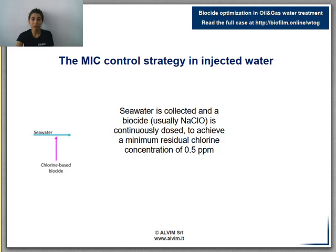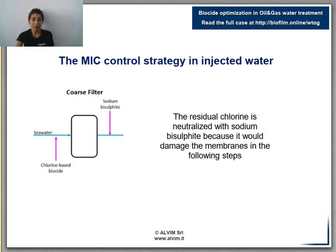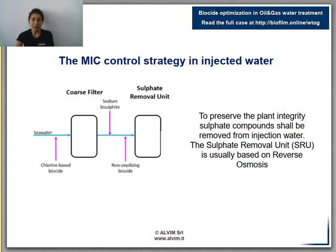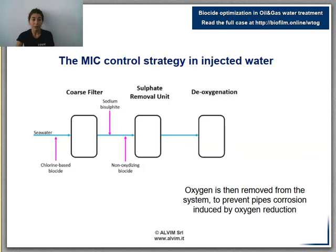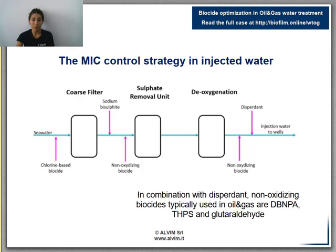First, seawater is collected and biocide is continuously dosed. Then filtration is needed to remove solids. Seawater must be neutralized, and it is recommended to eliminate sulfate ions from injected water — a reverse osmosis treatment is applied for this. The presence of oxygen is also very dangerous because of steel corrosion, so in the deaerator, oxygen is removed. Here the development of anaerobic bacteria is very likely, so a non-oxidizing biocide is dosed. In oil and gas industries, the most used are DBMPA, THPS, and glutaraldehyde, together with dispersants. Finally, seawater has been properly treated and can be injected into wells.